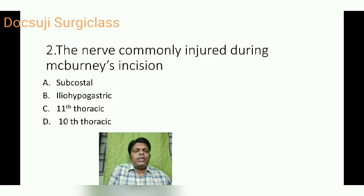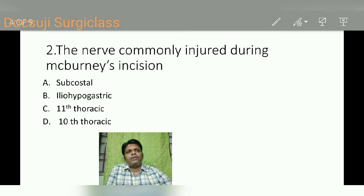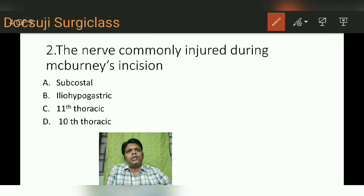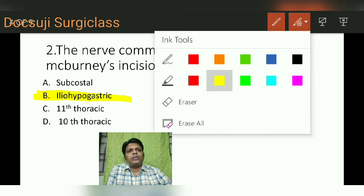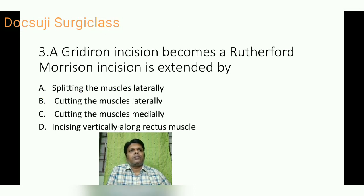The second question: which nerve is commonly injured during McBurney's incision? This is a straightforward anatomical question. The answer is the ilio-hypogastric nerve.